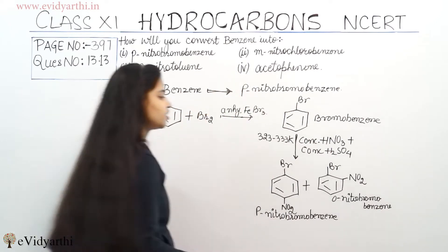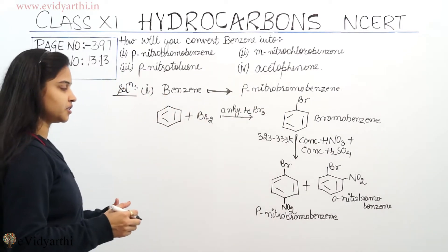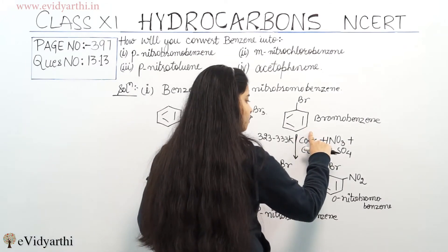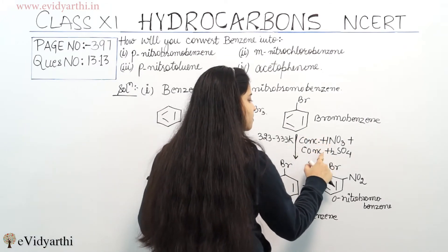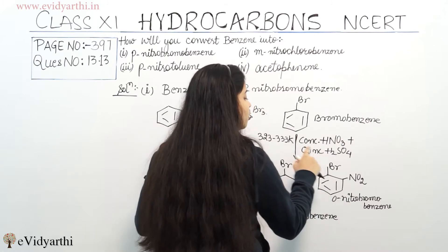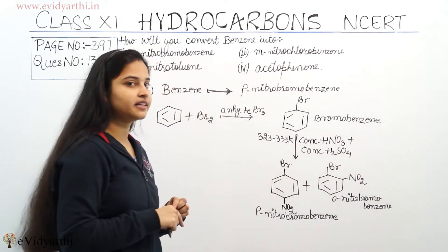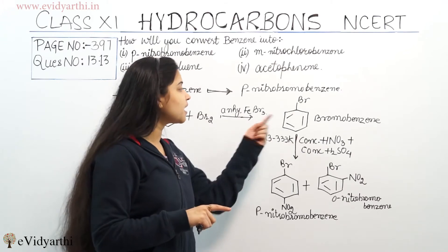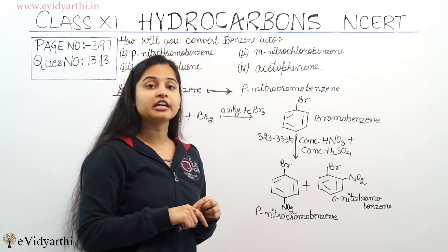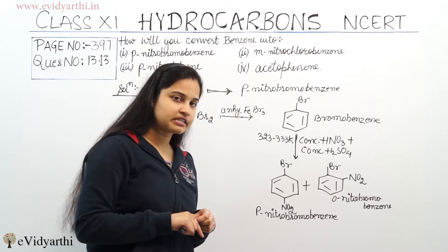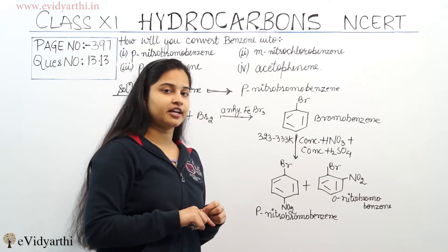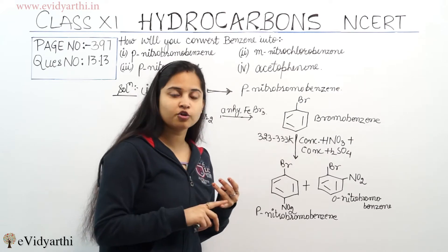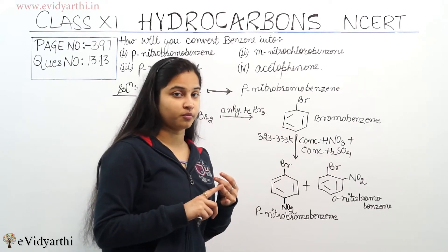So after nitration, I got two compounds: para-nitro-bromo-benzene and ortho-nitro-bromo-benzene. This is the nitration process — when we add concentrated HNO₃ plus concentrated H₂SO₄ to any compound, we are doing nitration of that compound. Here I did the nitration of bromo-benzene and got these two compounds.